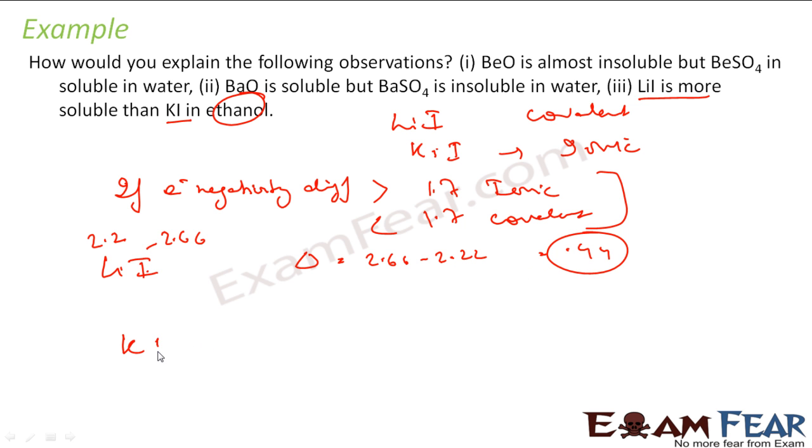Let's take KI. For potassium it is 0.82, for iodine it is again 2.66. We find the difference: 2.66 minus 0.82 is almost equal to 1.84, getting close to 1.7. So it is ionic and the previous one is covalent. This is what we have. So with this, if lithium iodide is covalent and potassium iodide is ionic, that means lithium iodide will be more soluble in ethanol.